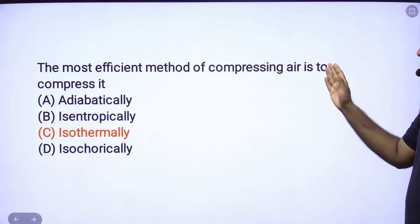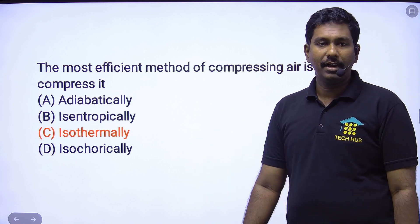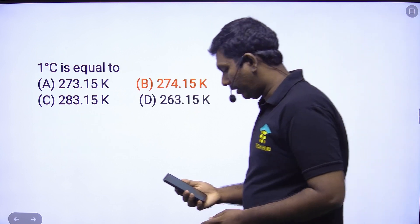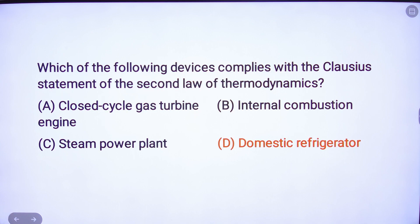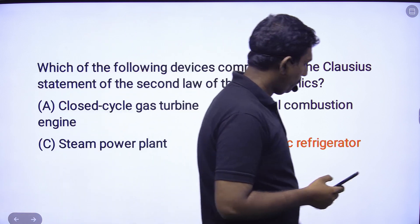The most efficient method of compressing air is to compress it isothermally — option C is the correct answer. 1 degree Celsius equals — option A is the correct answer. Which of the following devices complies with the closest statement of the second law of thermodynamics? Answer: domestic refrigerant, option D — correct answer.